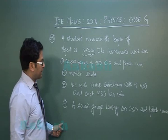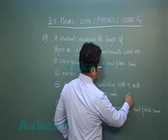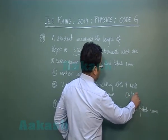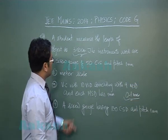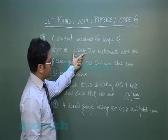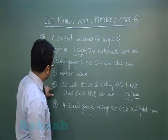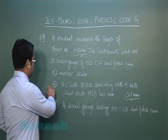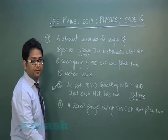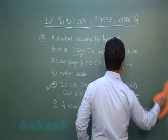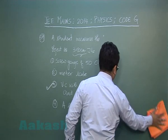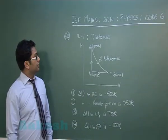The third one has a least count of 0.1 millimeter, so finally indicating the reading 3.50 centimeter must have been taken from the third one. So we go with option number three. Let's go with question number 60.